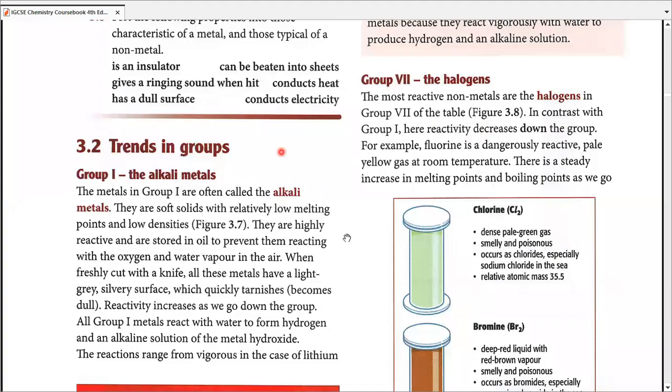Group seven, halogens. The word halogen means salt-forming compounds, and we picked this word for this specific group because almost all of the salts around the world, the majority come into being because of halogens.